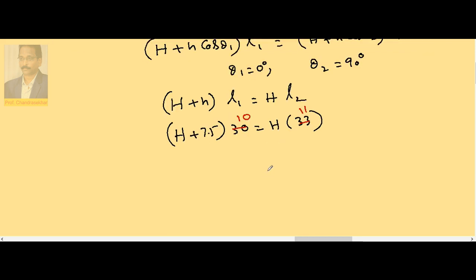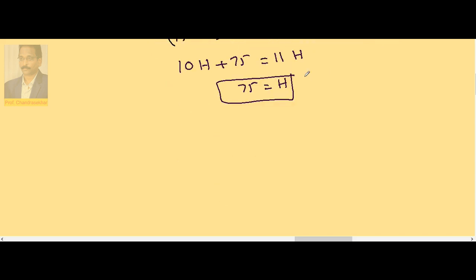Therefore, if you arrange these terms, 10 into capital H plus 75 is equal to 11 into capital H. So 75 is equal to H. Therefore, atmospheric pressure is 75 cm Hg.